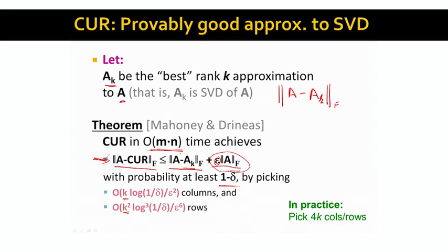In practice, this means we pick about 4K rows and columns and we will do as well as SVD does when SVD picks K rows and columns. CUR needs more of those, but there is important structure in real data which actually allows CUR to do much better than SVD in practice.